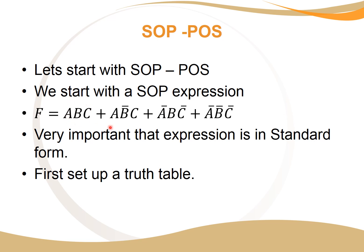Standard form means that all the variables available must be in every single term. So in this case we have A, B, and C variables, and they are present in every single one of them. Don't add a D term when there is no D term in any of the terms. If there's A, B, and C variables, you only have A, B, and C. But if there's a D, then you have to add a D. So the first thing you do is set up a truth table.